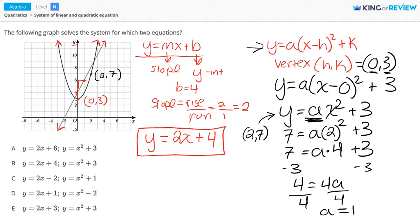So our equation for the parabola is y equals 1 times x squared plus 3, which can be simplified to y equals x squared plus 3.